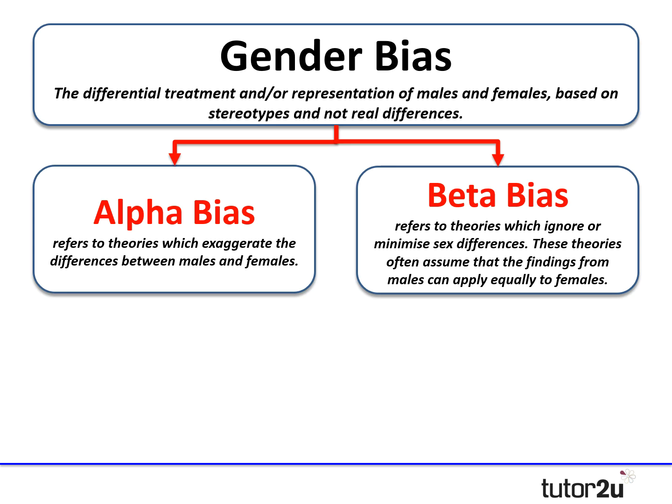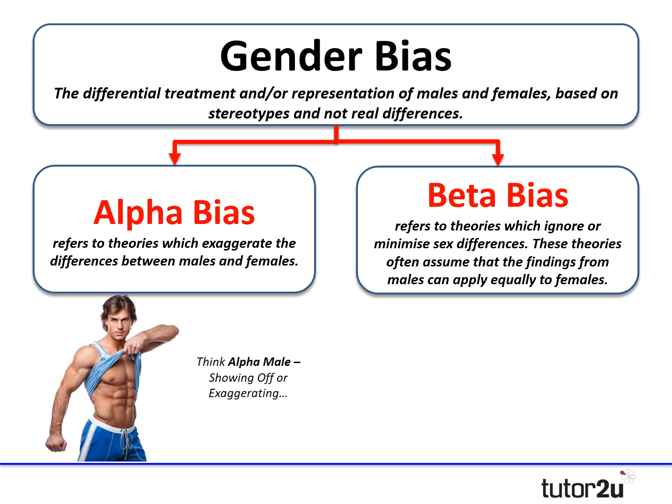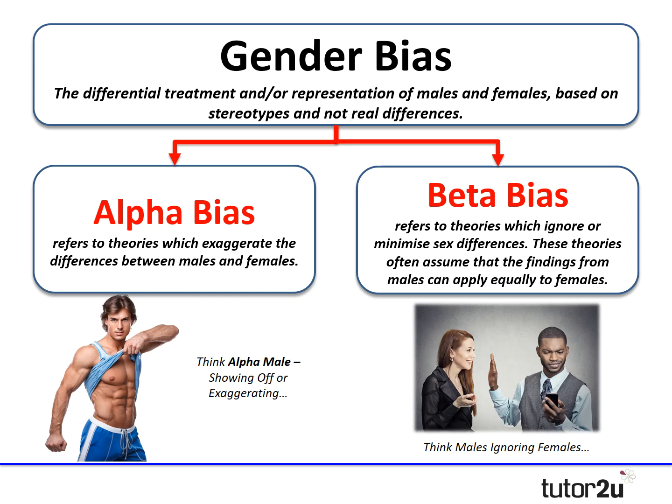A way to help you remember these: if we think about an alpha male, alpha males tend to exaggerate themselves to make themselves look better in front of other people — so that helps you remember alpha bias exaggerates. For beta bias, think about males ignoring females as a good example. Use those images if you're a visual learner to help you remember the two distinct terms.